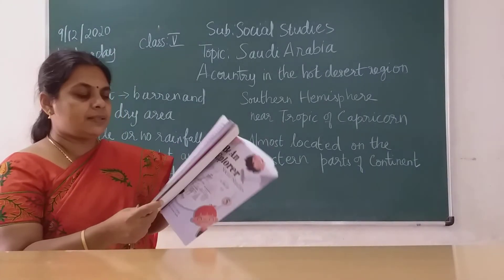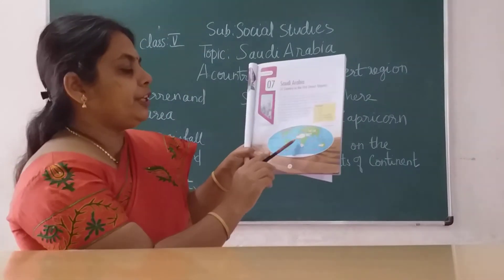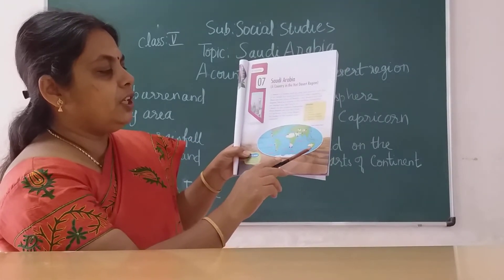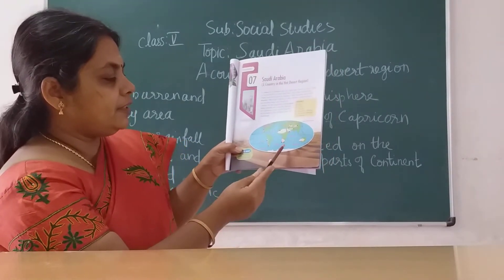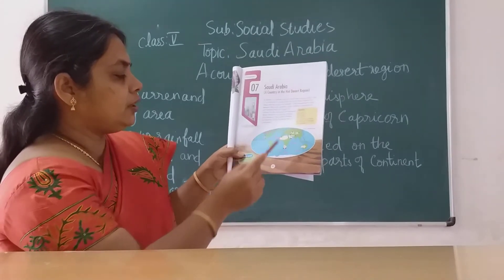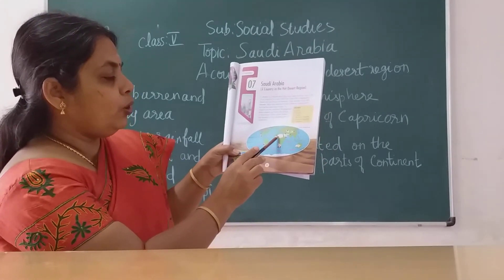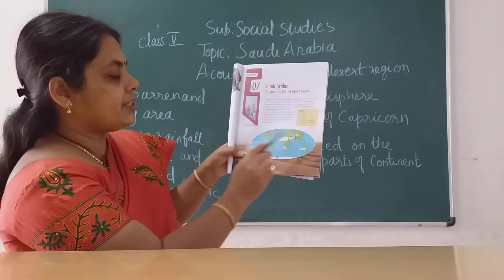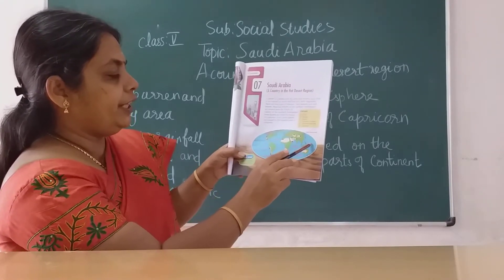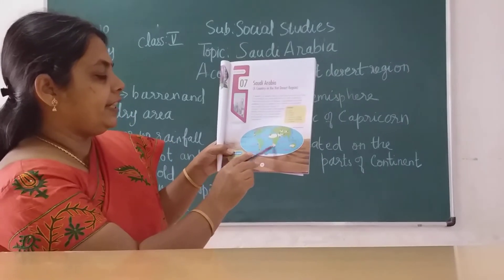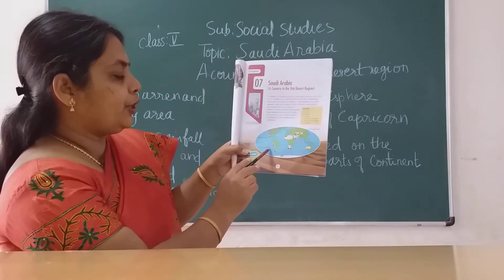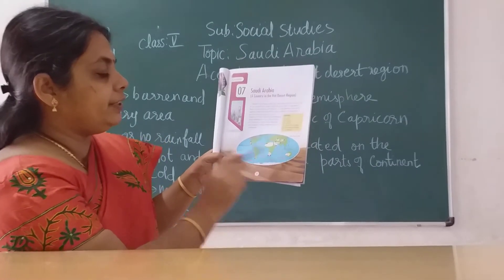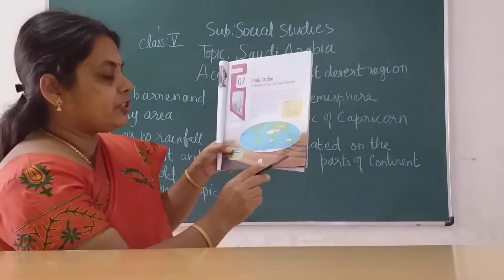Observe this map. The areas shown in peach color are deserts. Looking at the directions — east, west, north, south — more deserts are located near the Tropic of Cancer, and in the southern hemisphere they are near the Tropic of Capricorn.